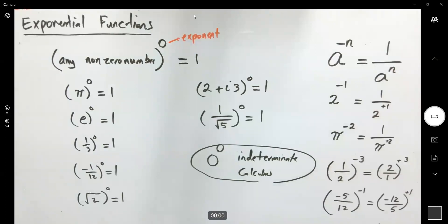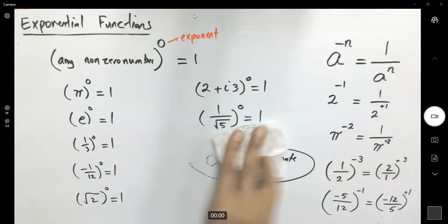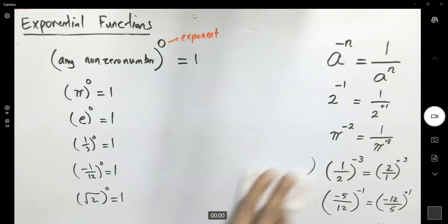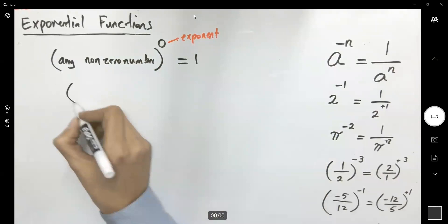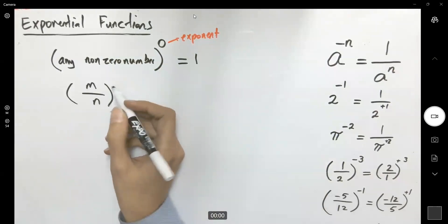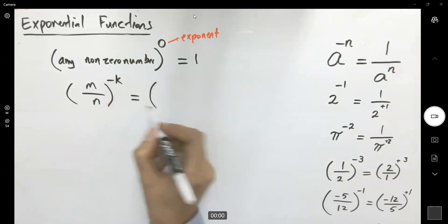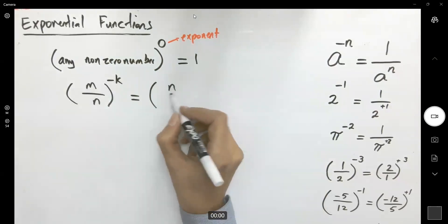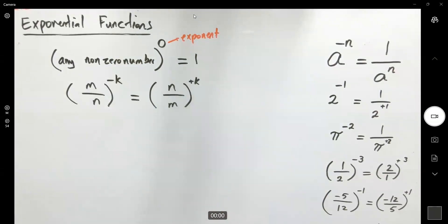In general, if you have m over n to a negative exponent negative k, this becomes n over m to the positive exponent k. This is always true.